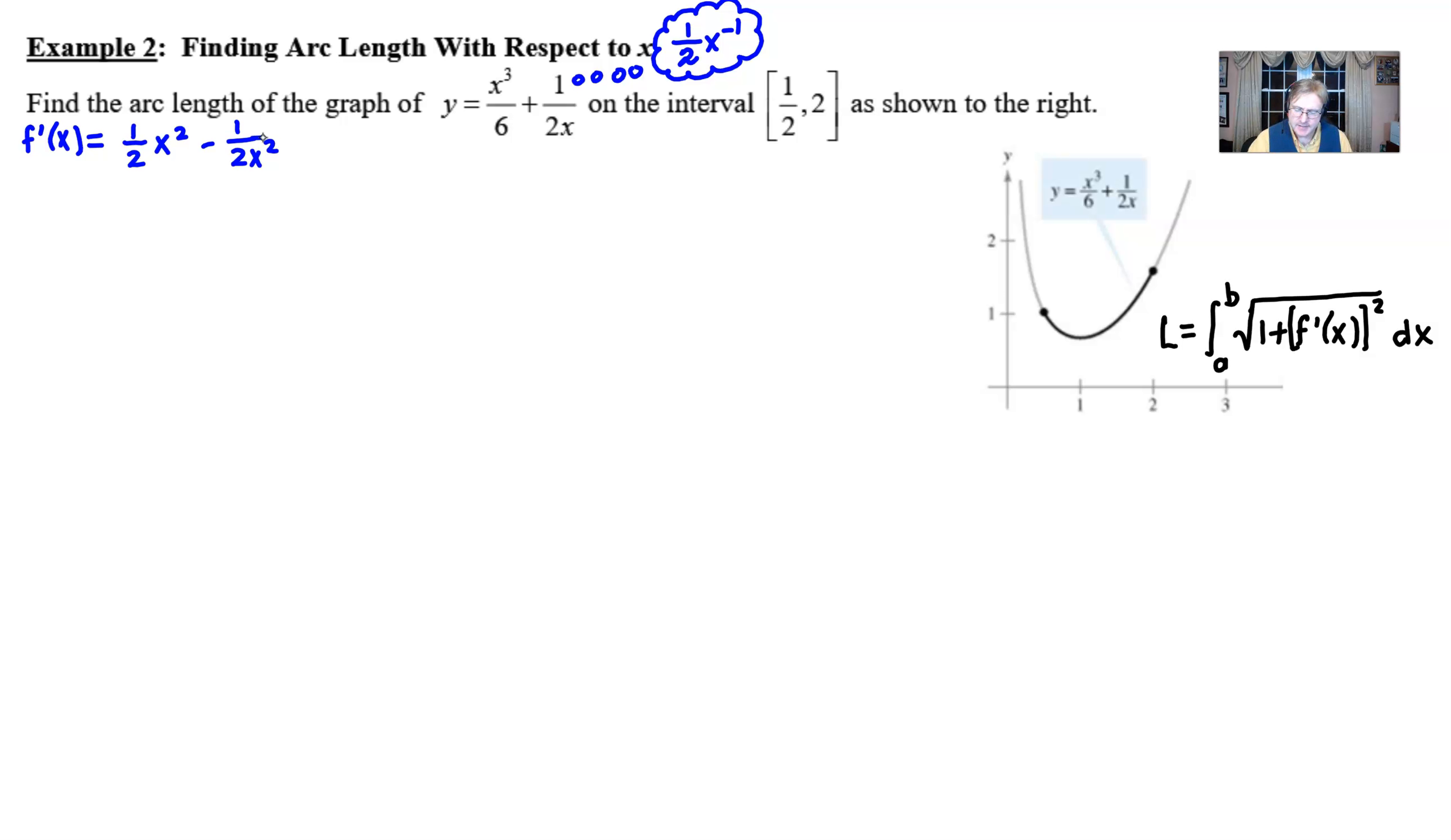Now one of the most troublesome things is having to square this f prime. I have come to the realization that if we get a common denominator first the squaring process is just a little bit more palatable. If we get this common denominator of 2x squared, that means that we're going to have to multiply this first fraction by x squared over x squared which is going to turn that current x squared into an x to the fourth.